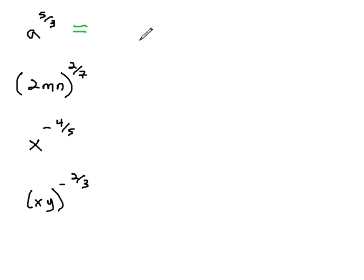Here, we have a to the 5 thirds. Changing it to a radical expression with a inside the radical, the denominator is what will always become our index. Don't lose the 5, that stays as an exponent on the entire thing. a to the 5 thirds is the same as the cube root of a to the 5th power.